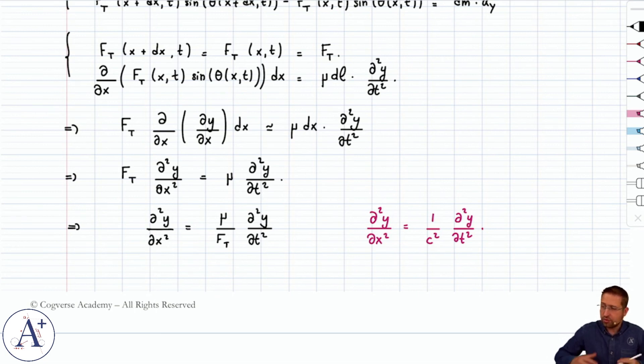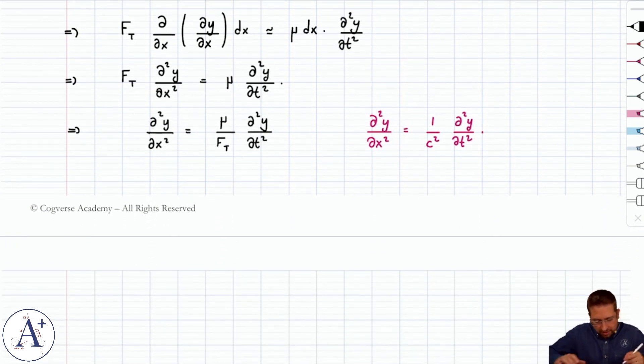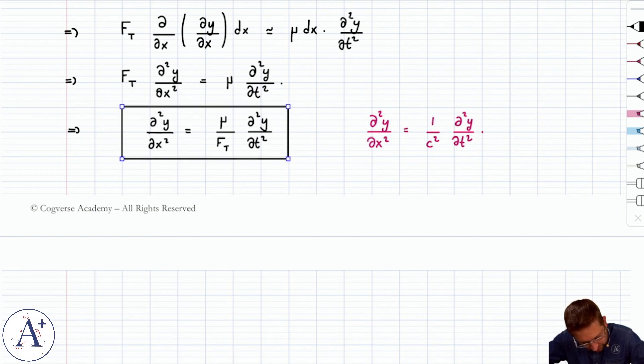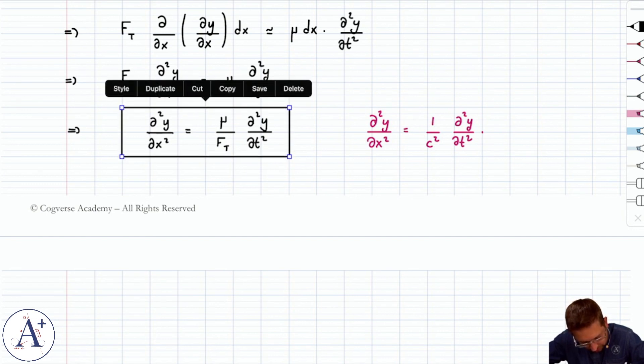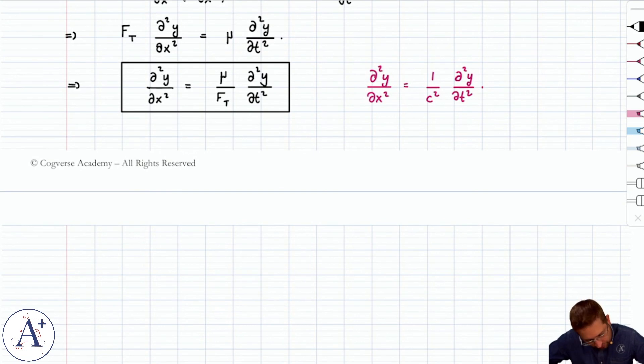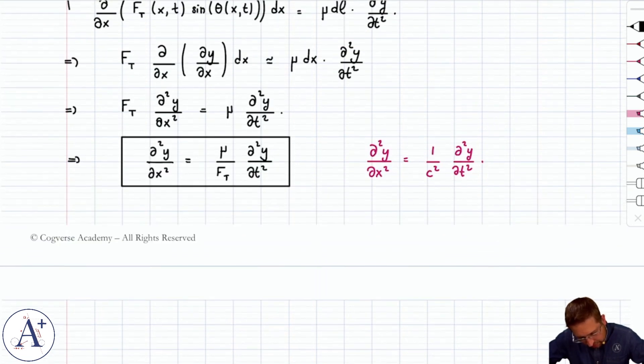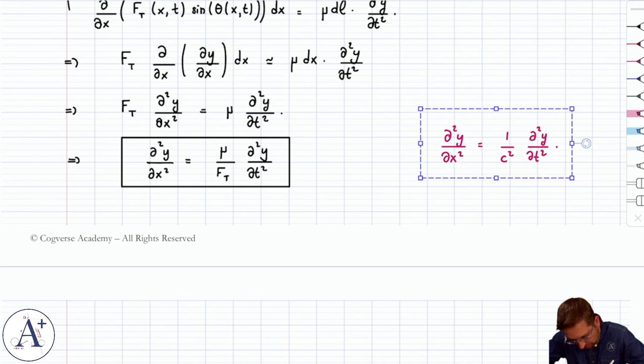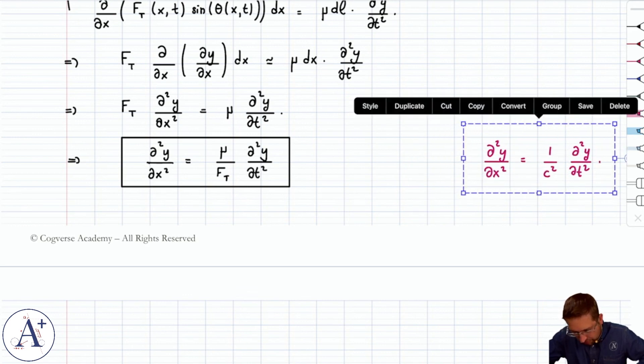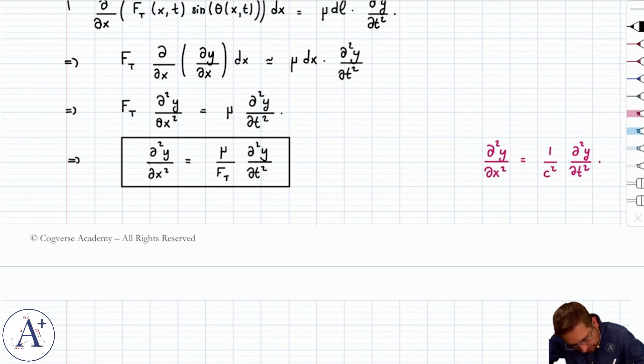If we compare the two forms, we come to the conclusion that, first of all, this is the wave equation, so that's worth boxing right there. Second of all, that the celerity c is equal to square root of F_T over μ.